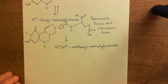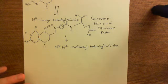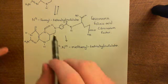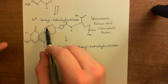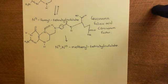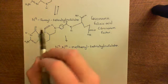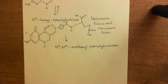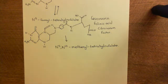N5-formyl-tetrahydrofolate can be converted to N5-N10-methenyl-tetrahydrofolate. Basically what we're going to do is cleave certain bonds here. Let me show you how we're going to do this — it's this portion here that's all going to be affected. The rest of this structure is going to remain the same, and I'll talk you through what's going to happen before we actually draw out the structure.